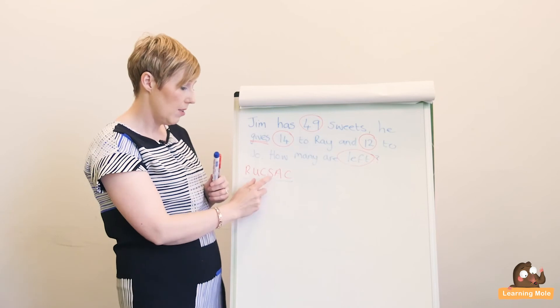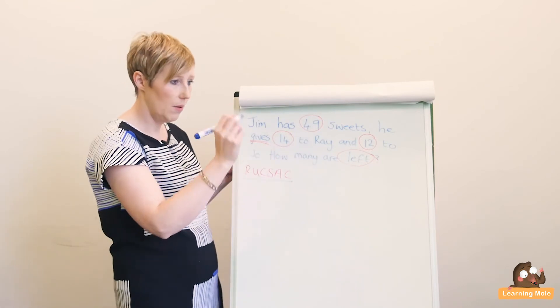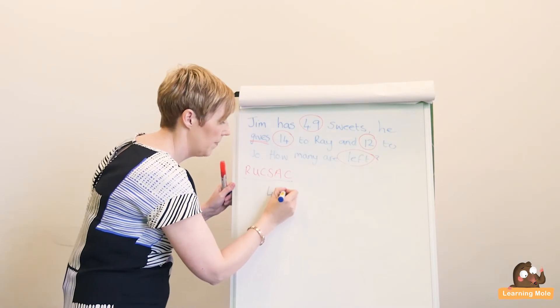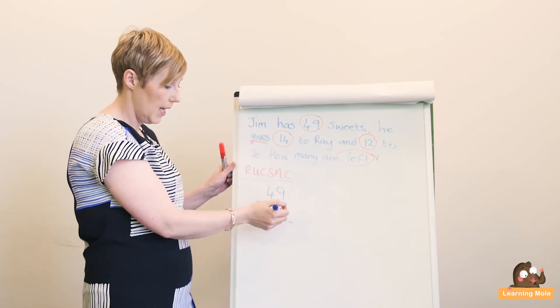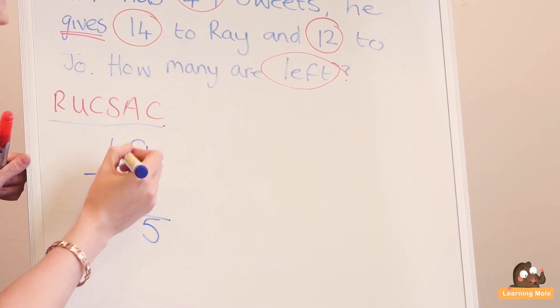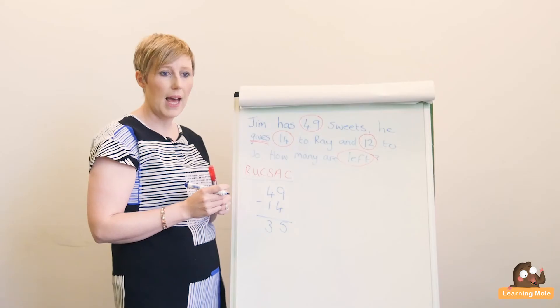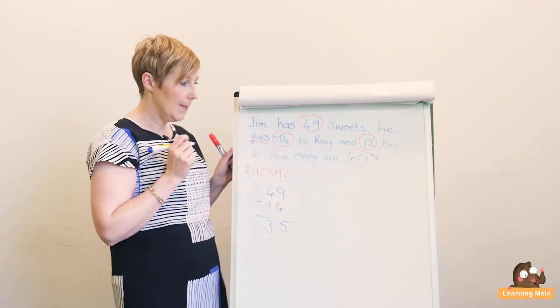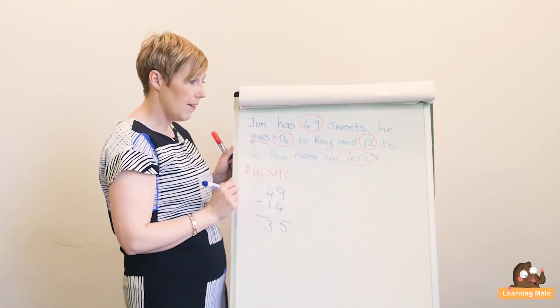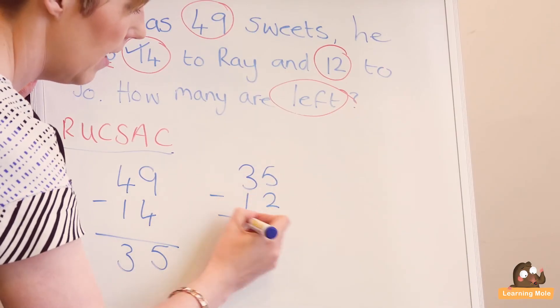Then we start to solve. We know first of all he gives 14 away, so we want to do our 49 take away 14. You might want to do that as a column, no problem at all. 9 take away 4 is 5, 4 take away 1 is 3, so he's got 35 sweets left. He then - and I would actually even tick that off to say I've done that - he then wants to give 12 away. So now he has to start with 35 and he takes away his 12, which is 23.